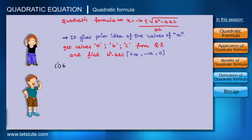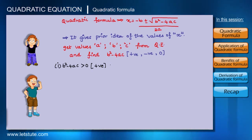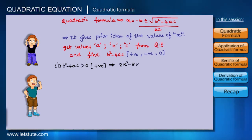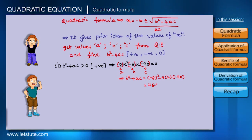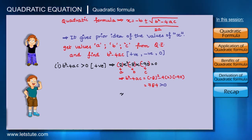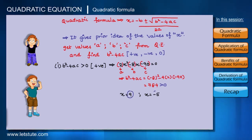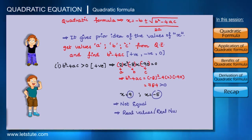If B² minus 4AC is positive, meaning greater than zero, let's see what happens with our example: 2X² minus 8X minus 90 equals zero. Here A is 2, B is minus 8, and C is minus 90. The value of B² minus 4AC comes out to 784, which is greater than zero. We got two values of X — 9 and minus 5 — which are unequal and both real numbers.